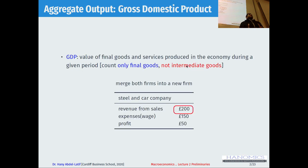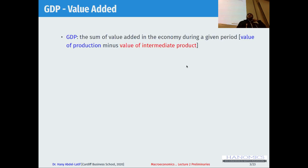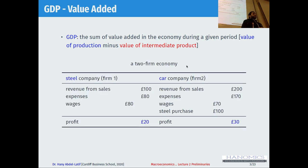Following the same example, if we were to merge these two companies to form a new company, the revenue from that company would be only £200 — that's the GDP — because we're looking at the value of the final goods. There's another way to calculate GDP: by looking at the value added, which is the value of production minus the value of intermediate products. Following the same example, we have the same two firms.